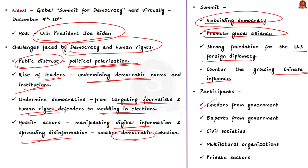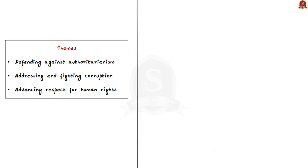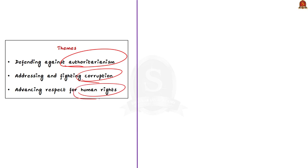Leaders from governments, experts, civil societies, multilateral organizations, and even the private sector can participate in the summit, provided they believe in and promote democratic values. The summit has three important themes: first, defending against authoritarianism; second, addressing and fighting corruption; third, advancing respect for human rights.